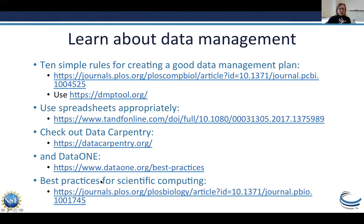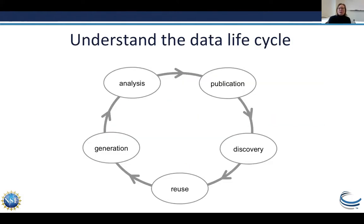If you're struggling to find where to publish, helpful resources include FAIRsharing.org — which lists databases, standards, ontologies, and vocabularies — Re3Data, and Scientific Data's own list of repositories. If you're in the agriculture community, AgBioData is a group of databases associated with agriculture and has a list of member databases to help you find species- or clade-specific options.